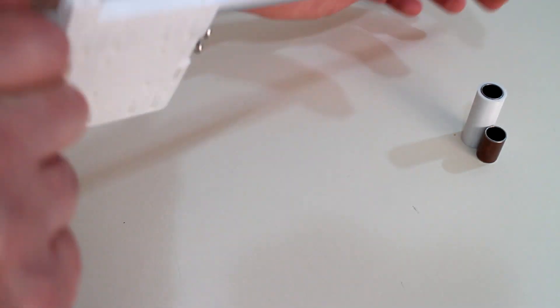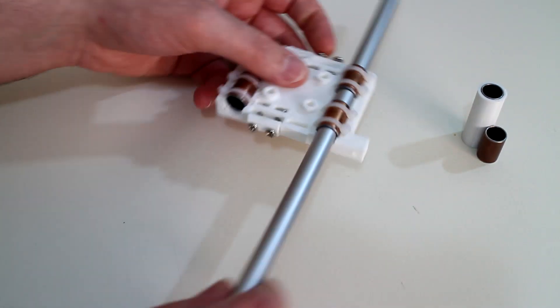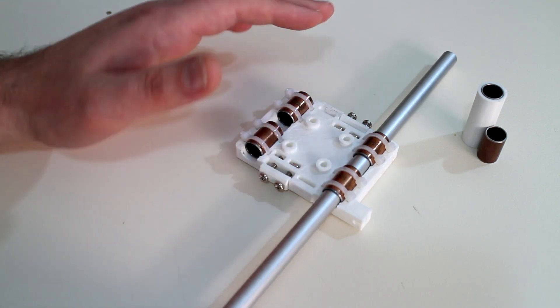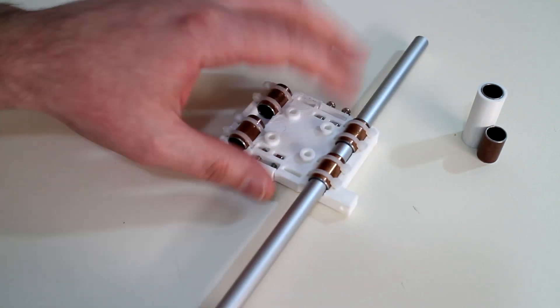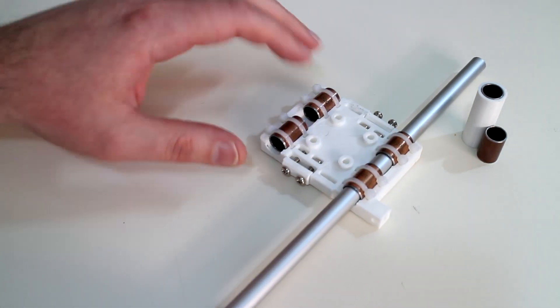It slides with gravity without a problem, so potentially I could have stuck with my original X carriage with these double bushings cable tied.